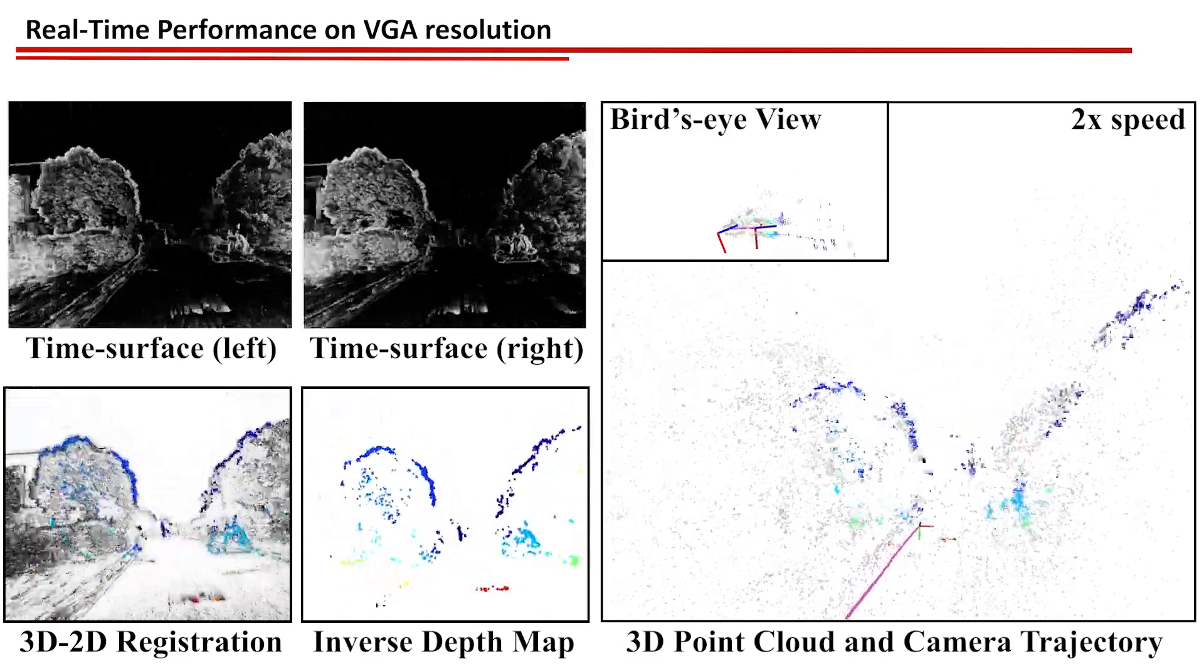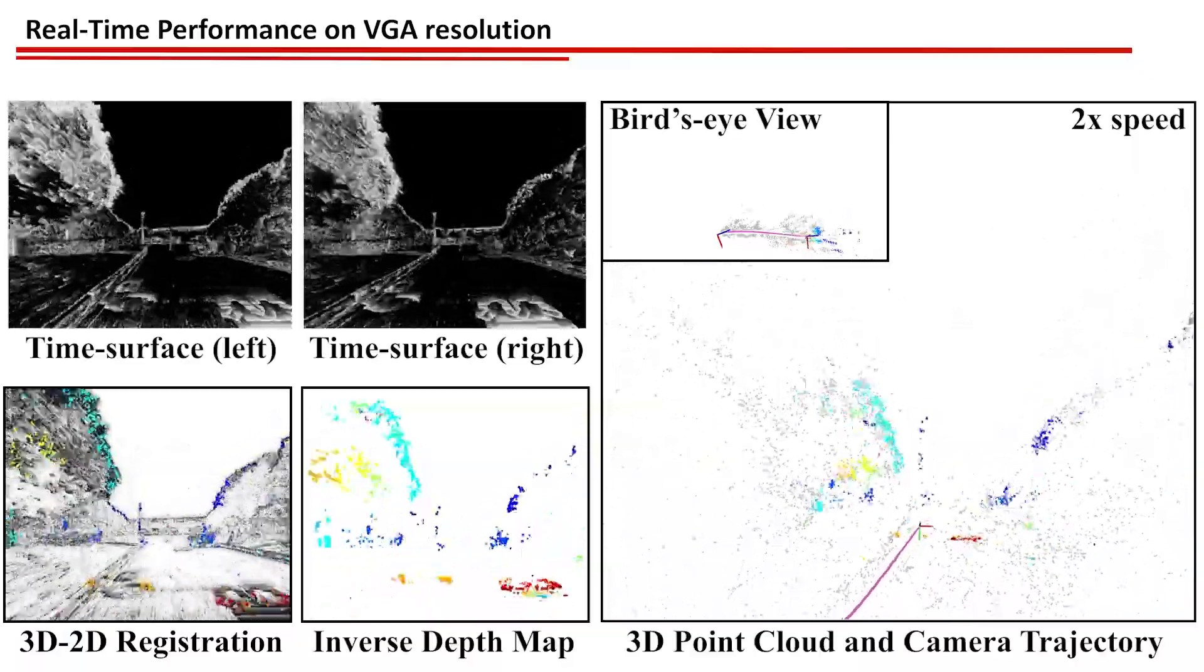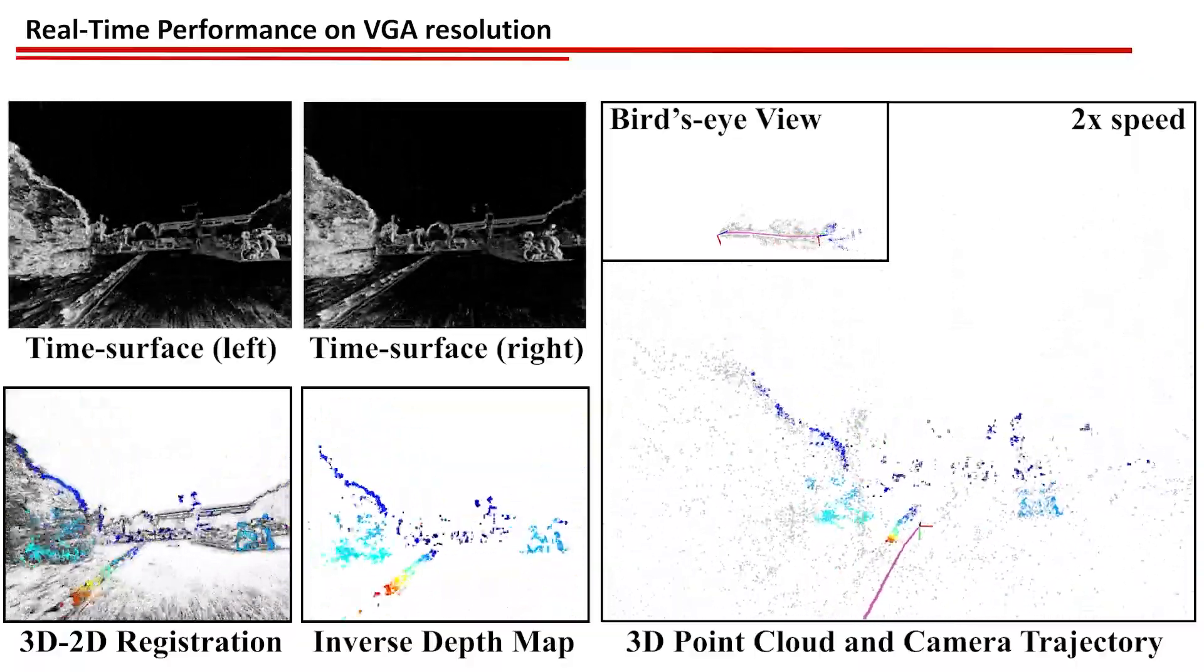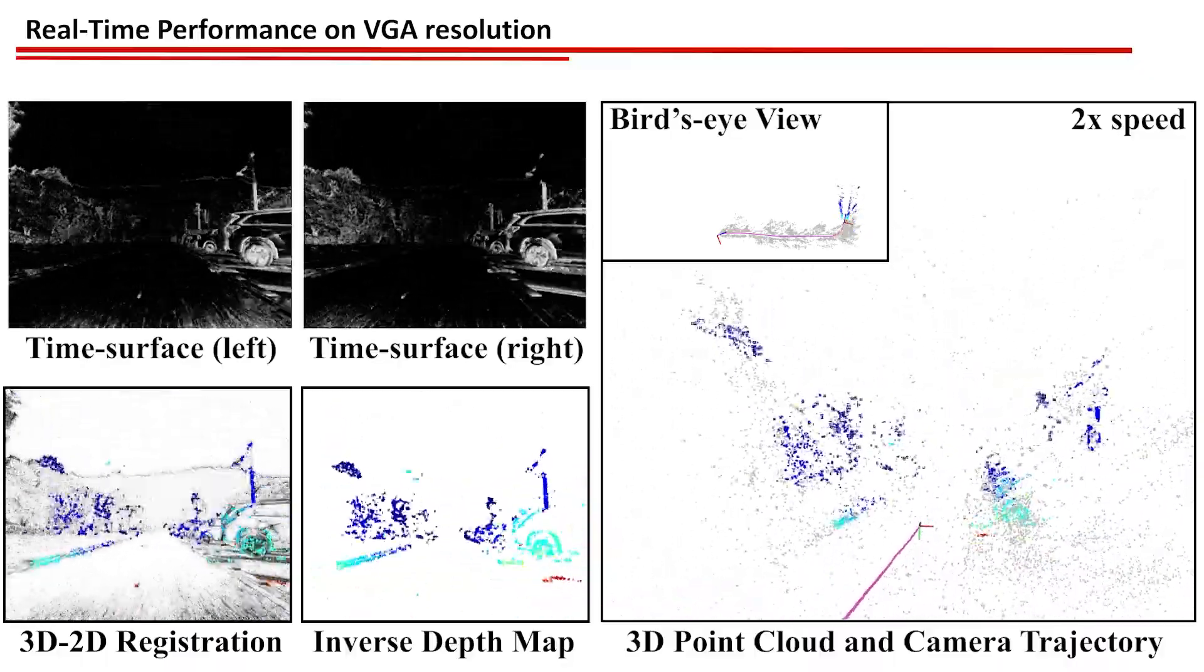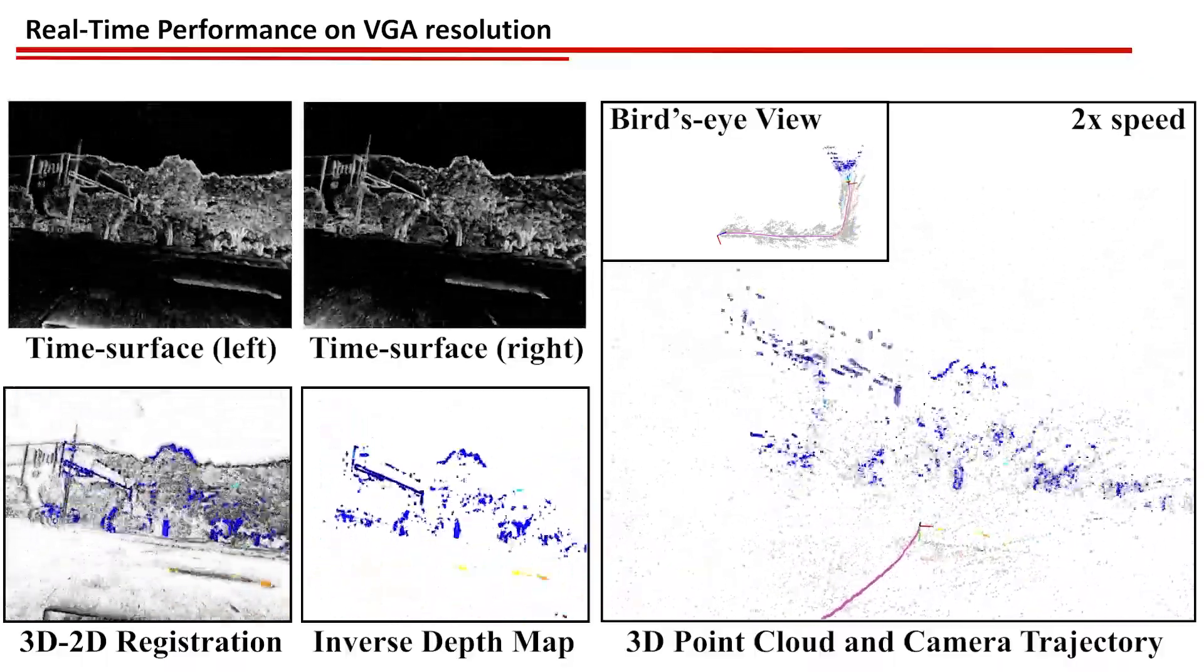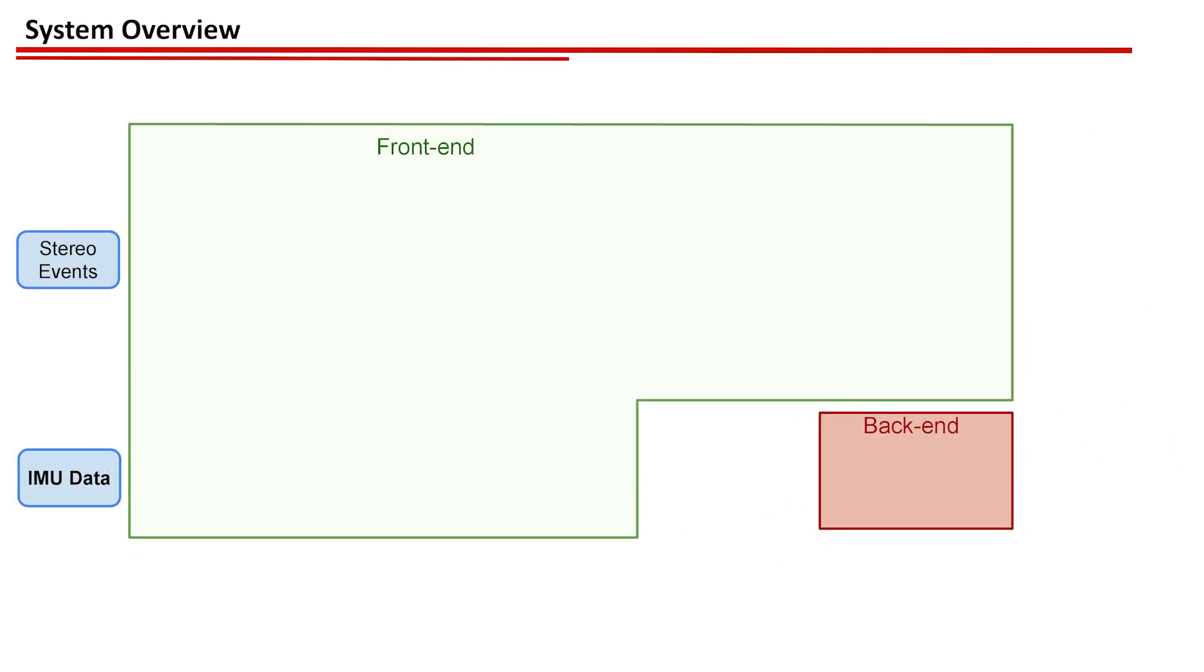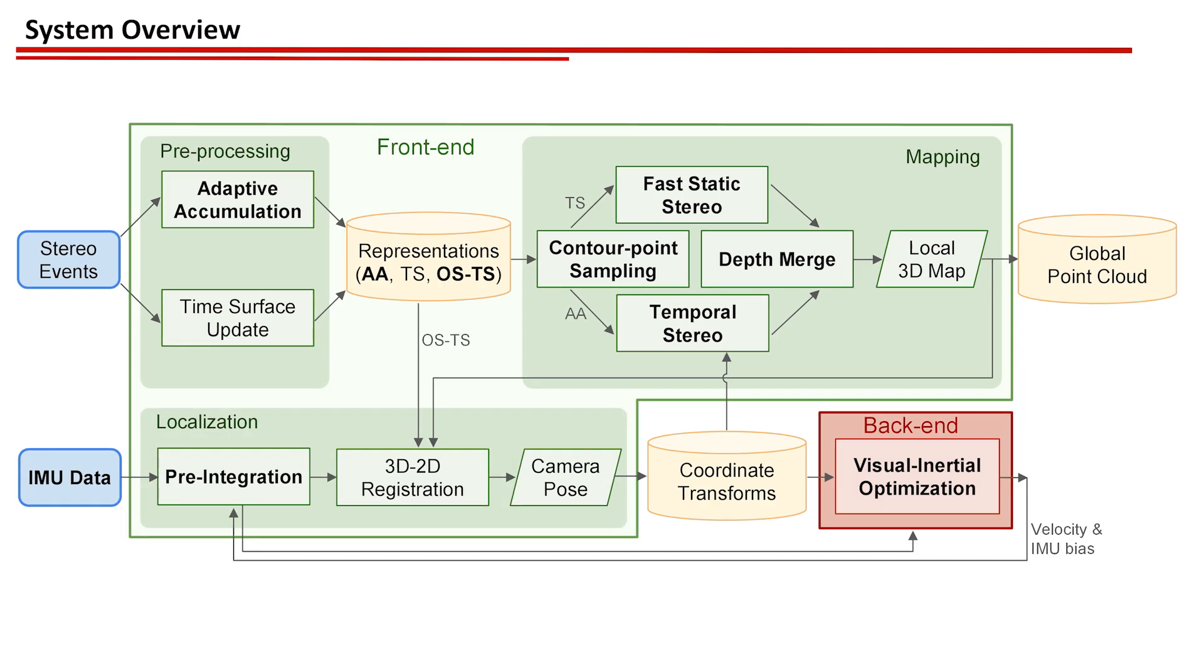We propose an event-based stereo visual inertial odometry based on ESVO, aiming to overcome the limitations of state-of-the-art direct methods, which suffer from high computational complexity in the mapping subproblem and degeneracy in camera pose tracking for certain degrees of freedom in rotation. The proposed system consists of four modules: preprocessing, mapping, localization, and the back-end.